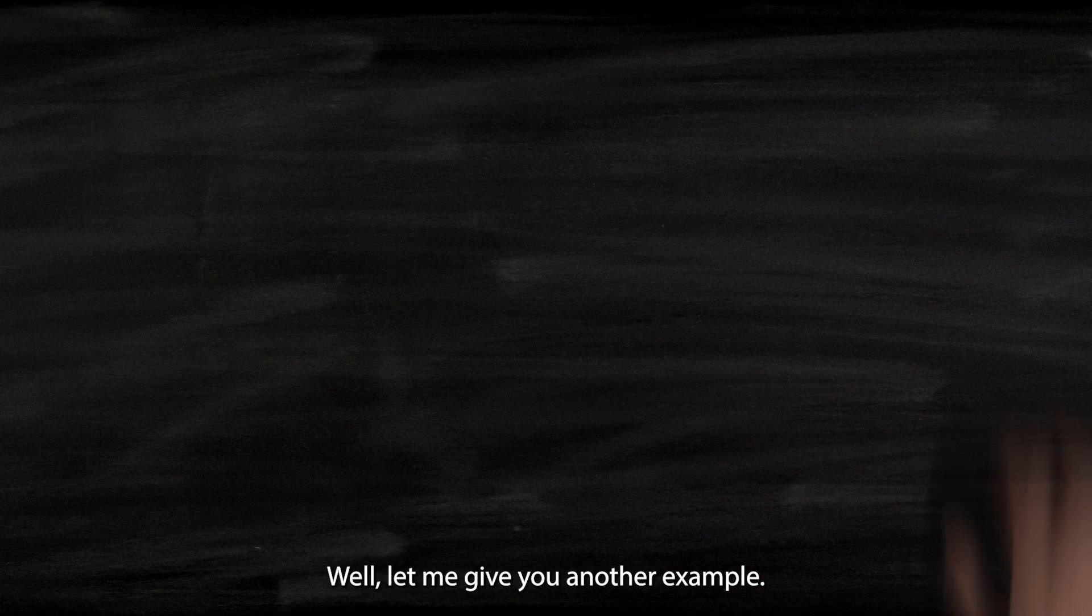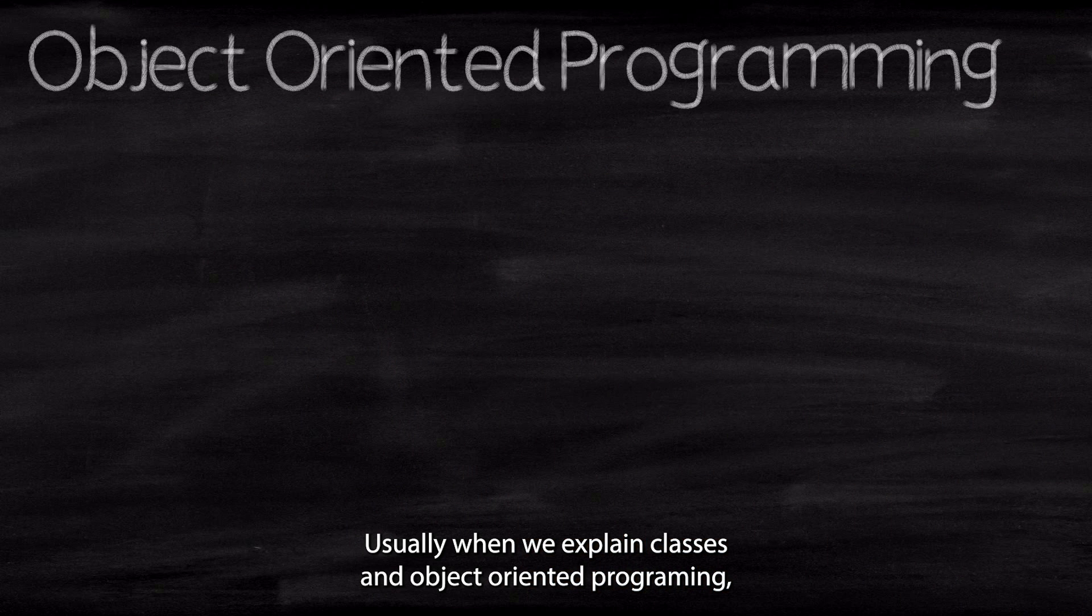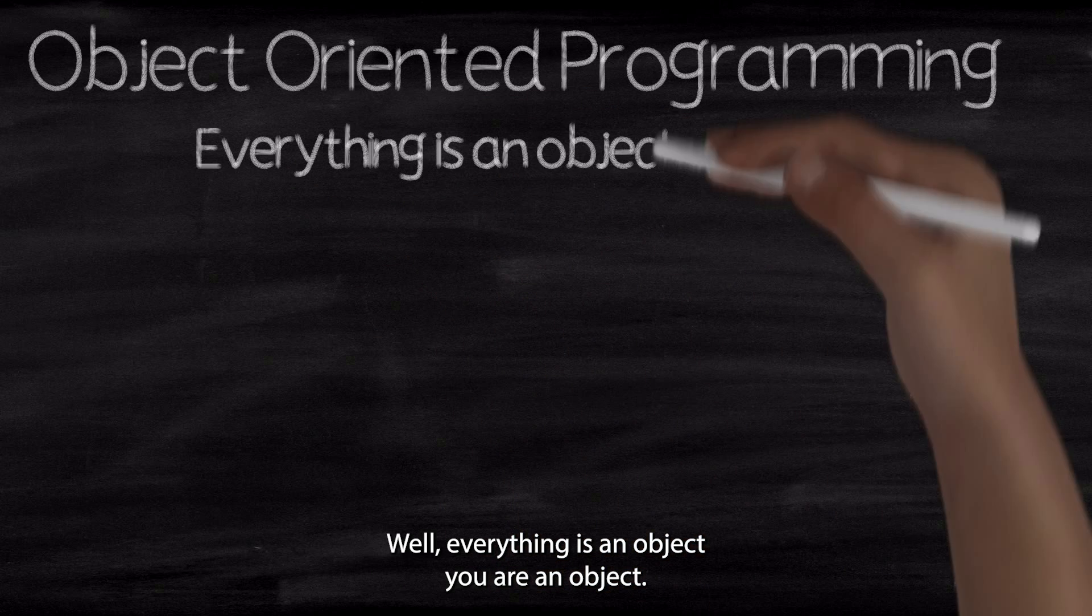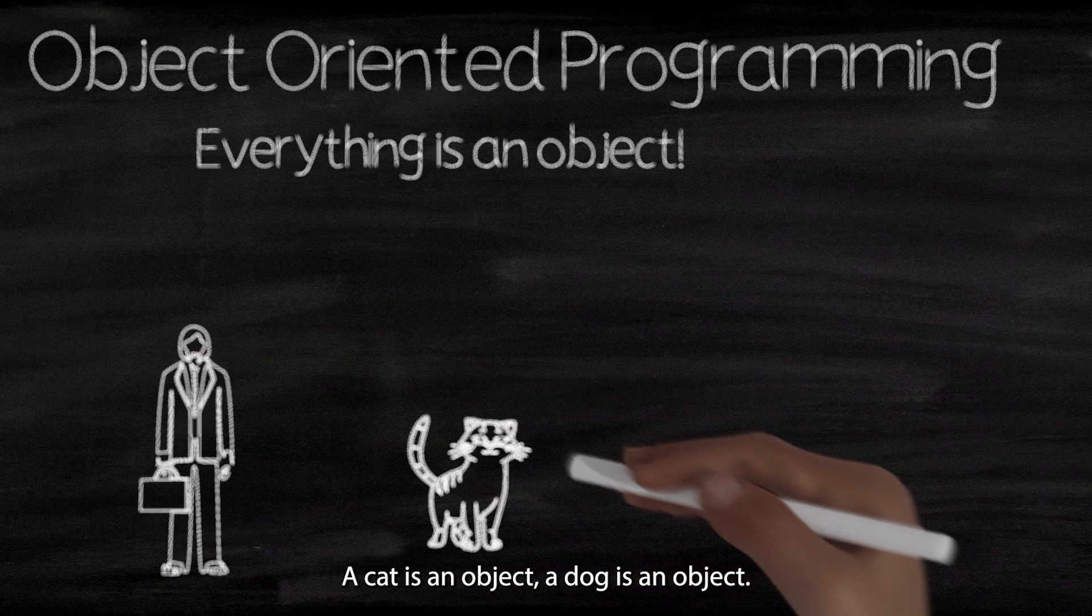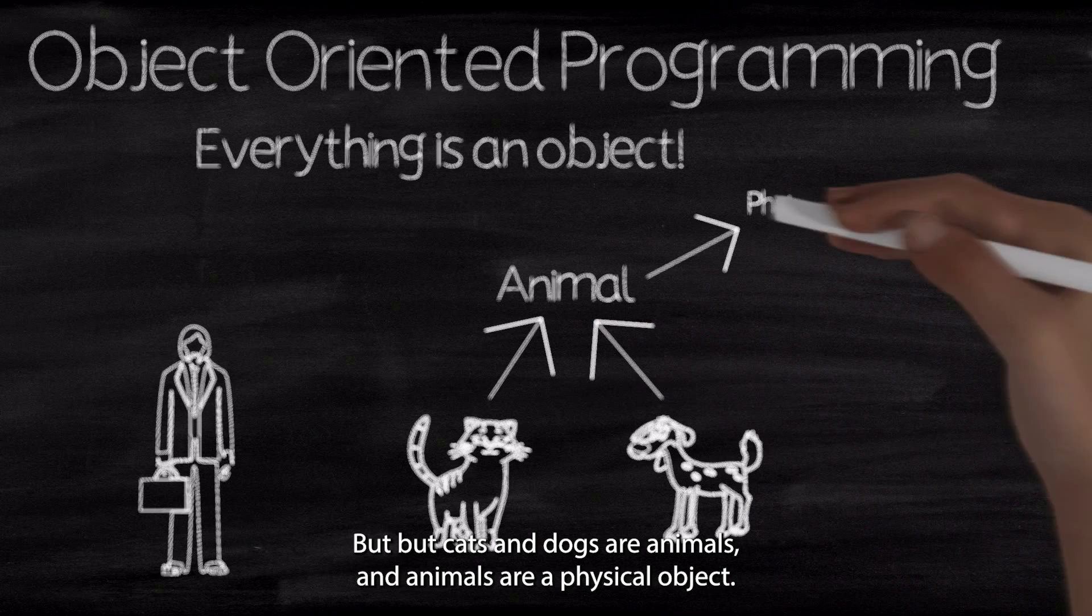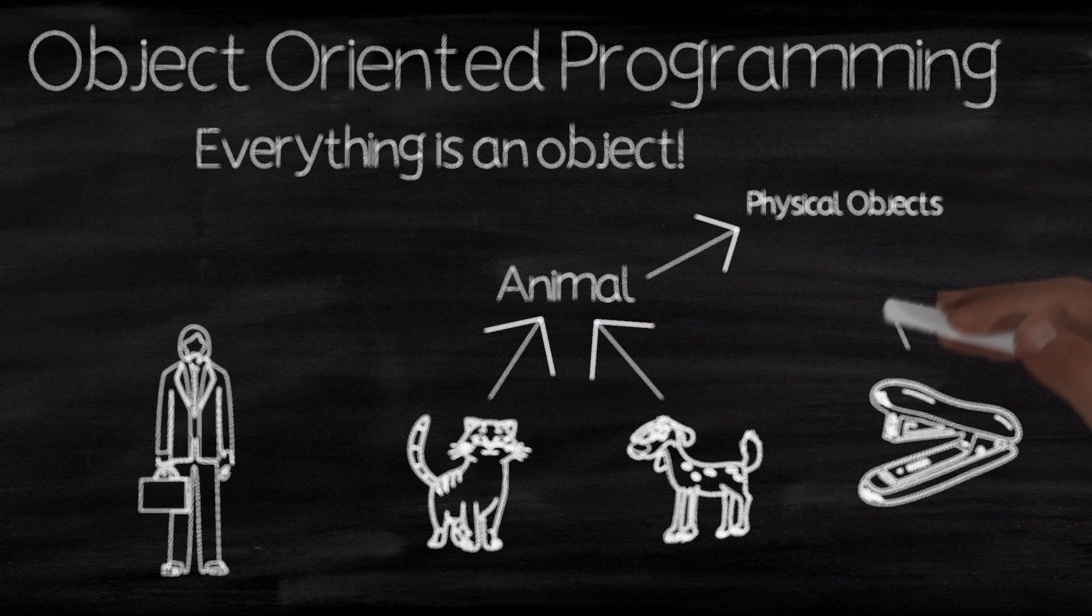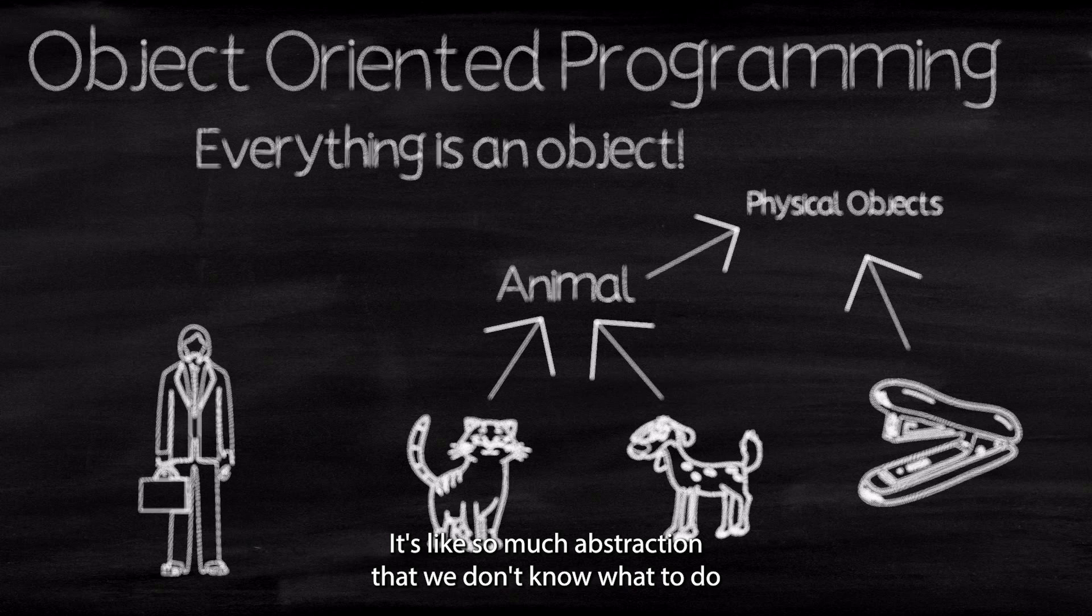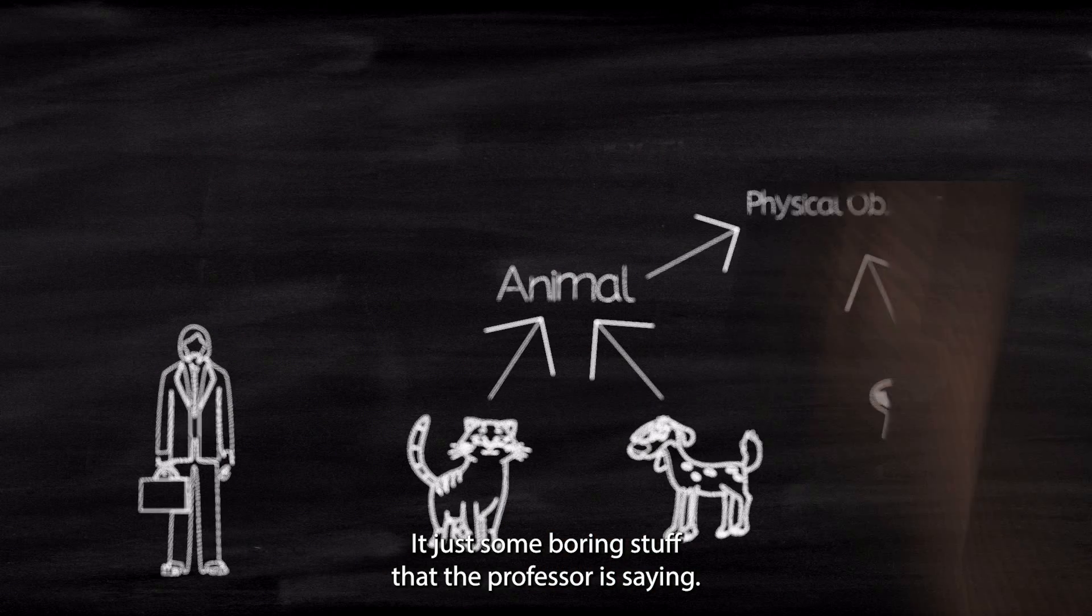Well, let me give you another example. Usually when we explain classes and object-oriented programming, we just love to over-abstract and make it all about philosophy. Like, let me explain what classes are to you. Well, everything is an object. You are an object. A cat is an object. A dog is an object. But cats and dogs are animals, and animals are physical objects. It's like so much abstraction that we don't know what to do with this information. It's just some boring stuff that the professor is saying.